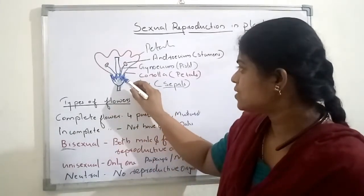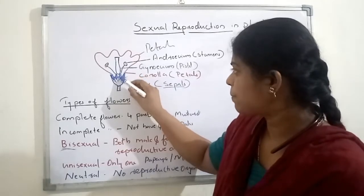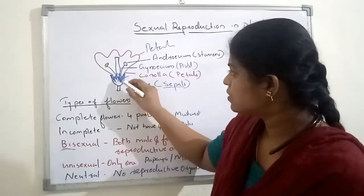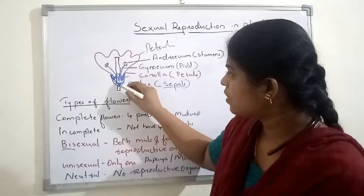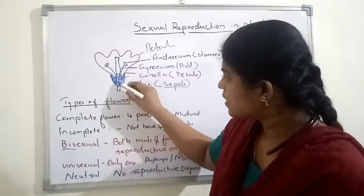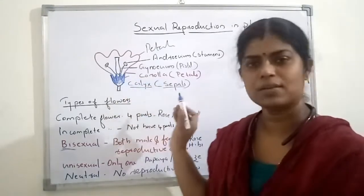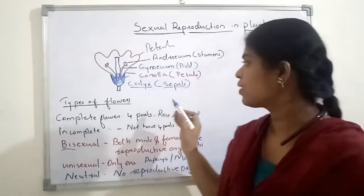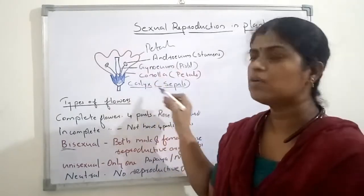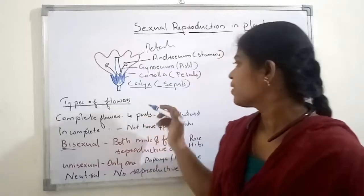The calyx is made up of so many sepals. This is one sepal, this is another one, this is another one, this is another one. All these sepals are fused together to make the calyx. In almost all flowers, the calyx will be green in color.